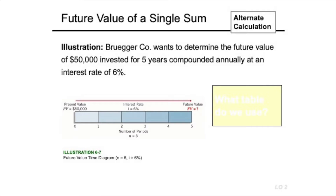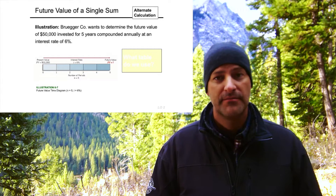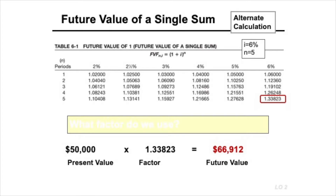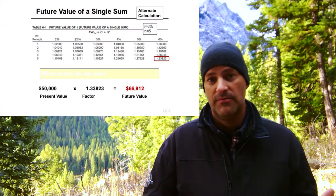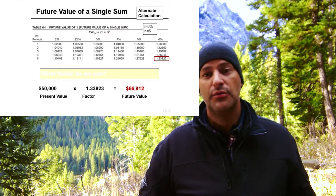Let's take an example where a company wants to determine the future value of $50,000 invested for five years, compounded annually at an interest rate of 6%. We know the present value is $50,000, and we're trying to figure out the future value in five years. This is compounding annually at 6%. Using the table, we've got five years at 6%, so our factor is going to be 1.33. That's the factor we need to multiply times the principal, which is $50,000.